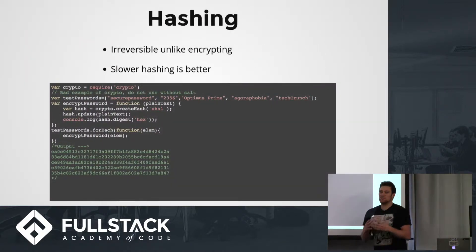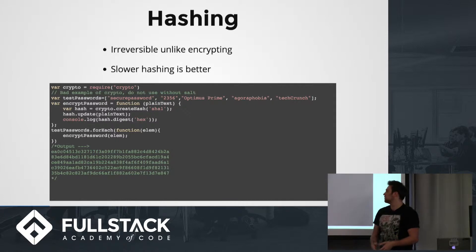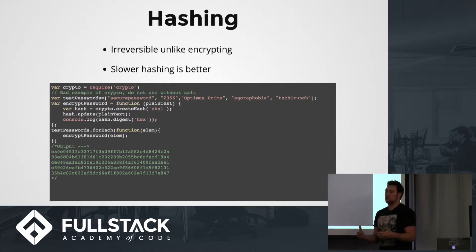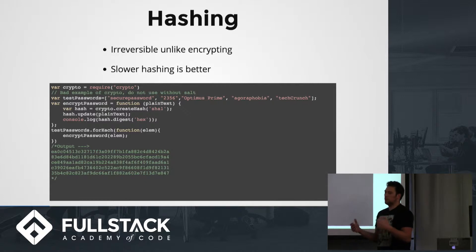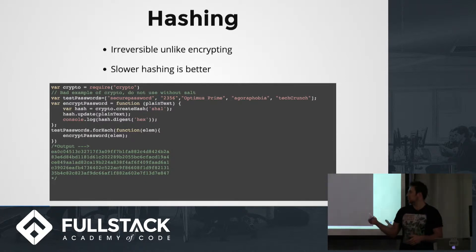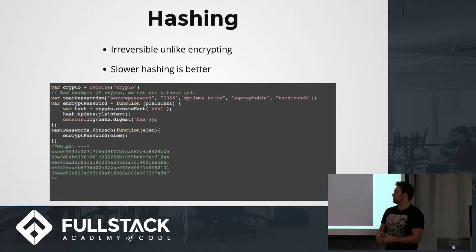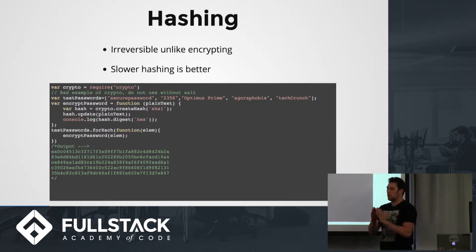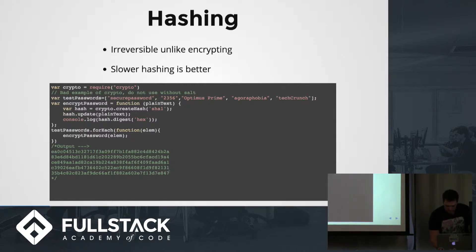The safest way to approach passwords is hashing because it's irreversible. With password encryption, you can decrypt it — so if an attacker has the key, it doesn't matter how secure the passwords were. If they gain access to your entire codebase and database, they'll be able to decrypt everything. With hashing, they have to know the password to gain access, because a hash is irreversible and one-way — if you don't know the password, you're not getting in.